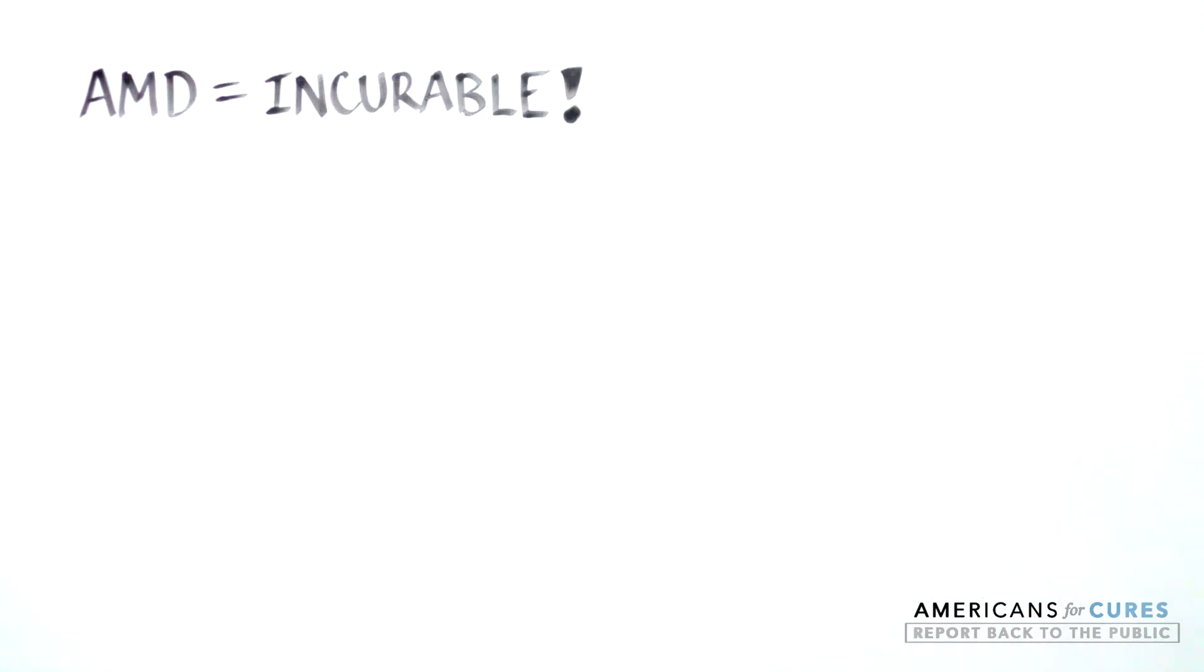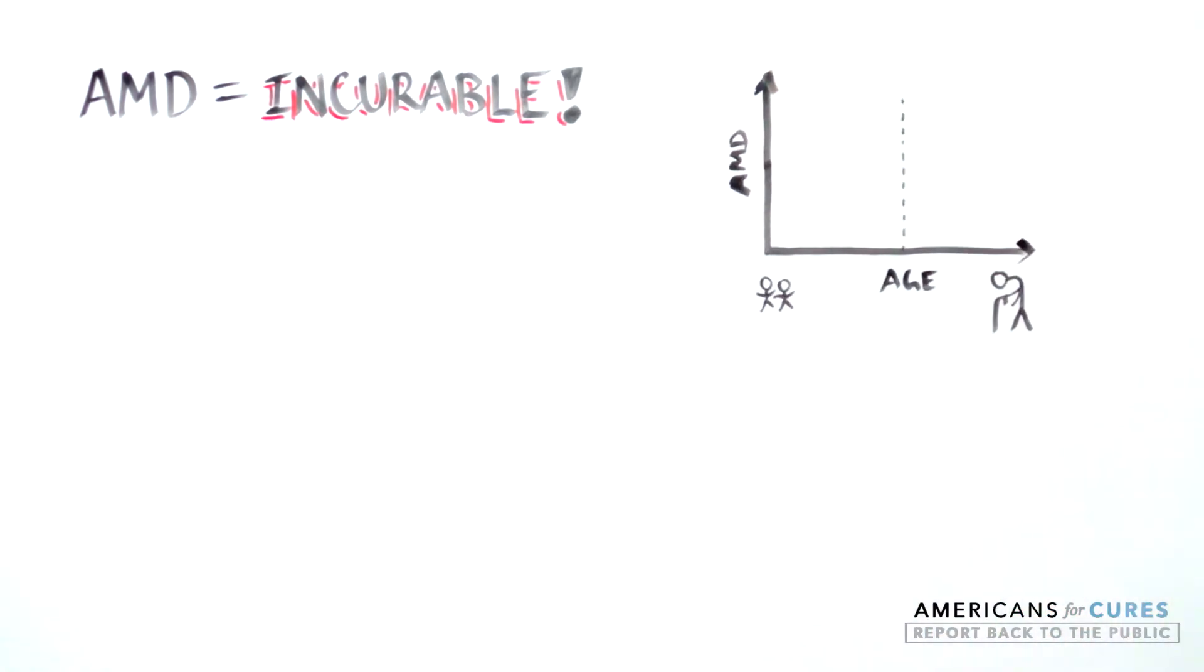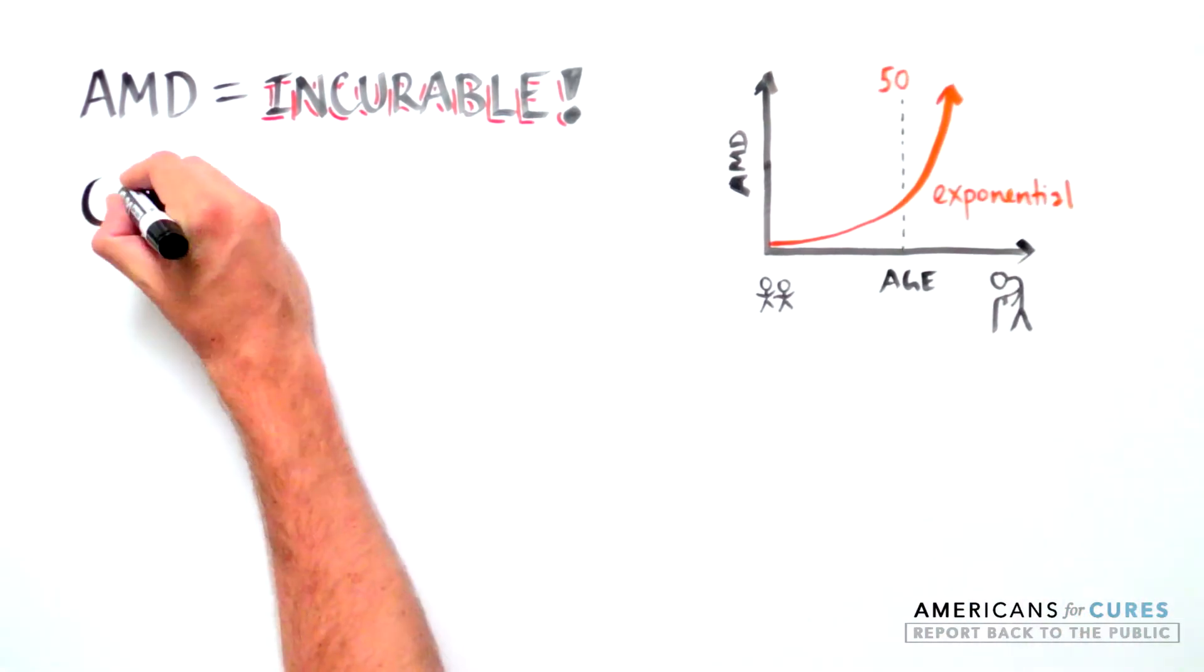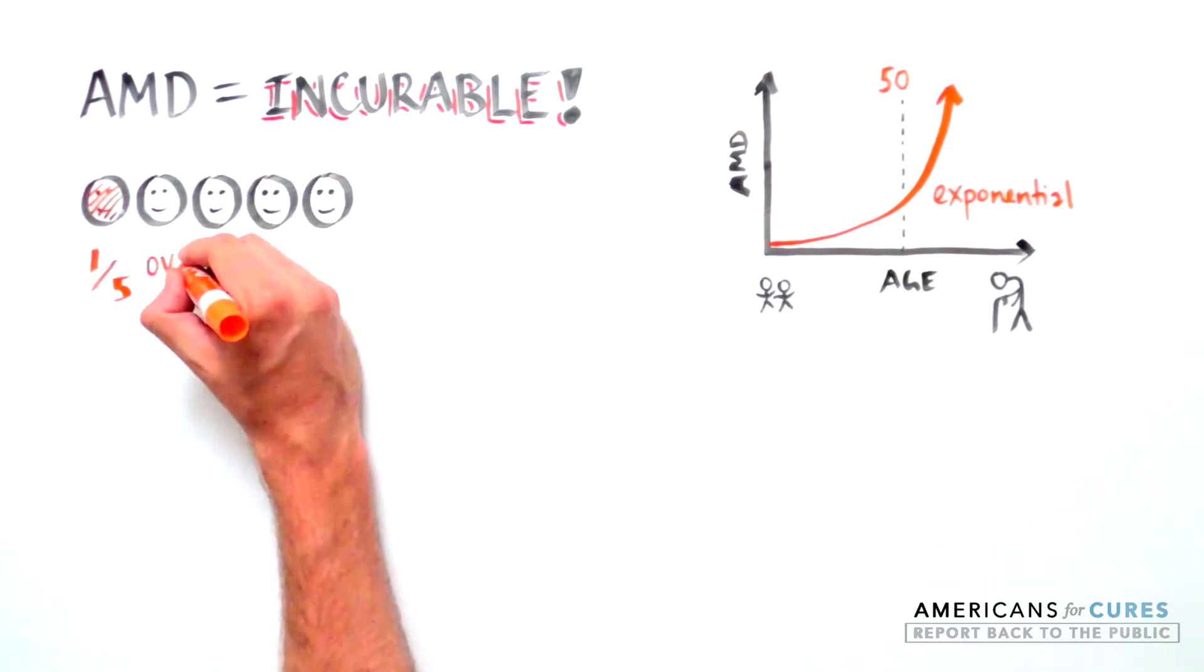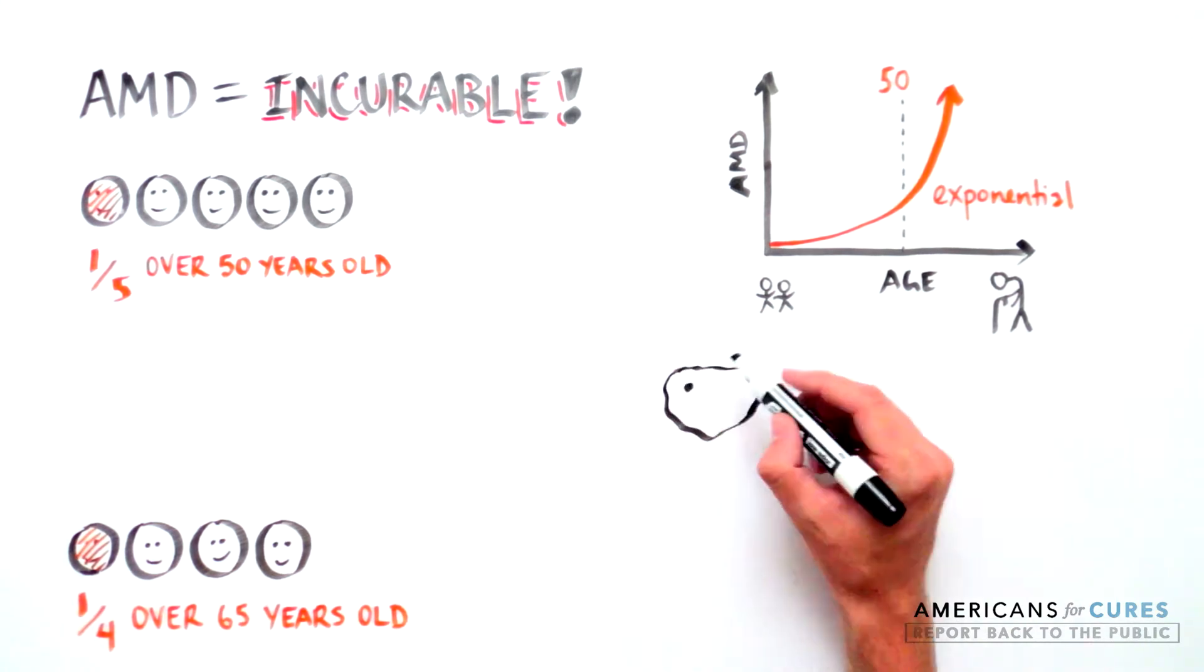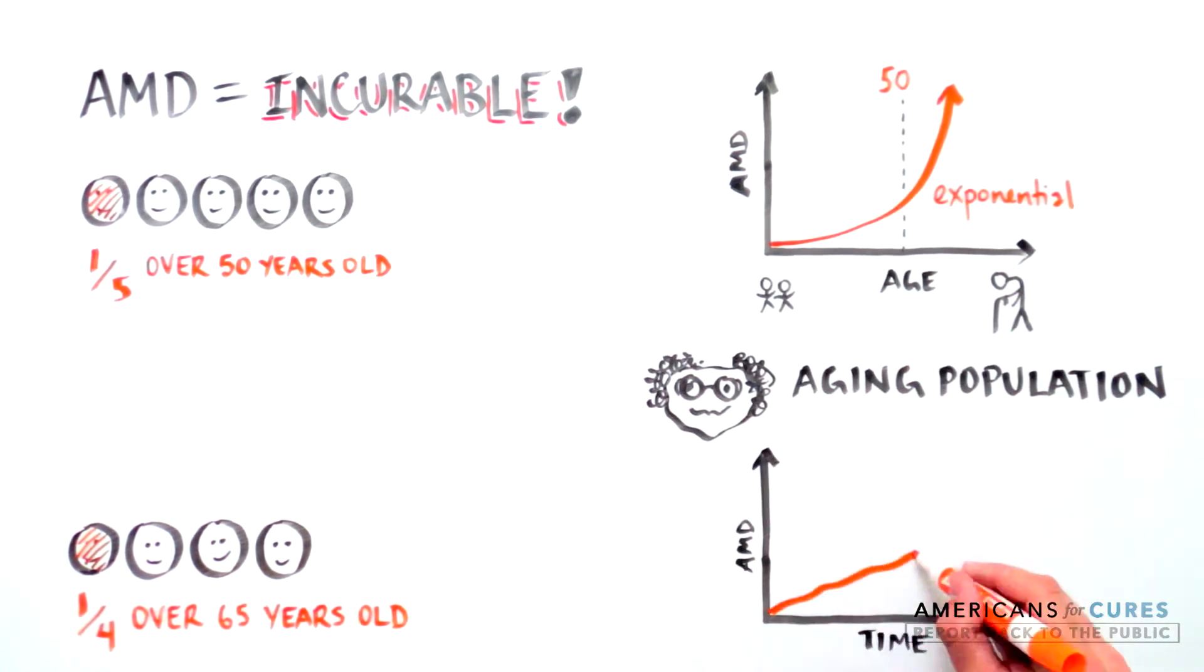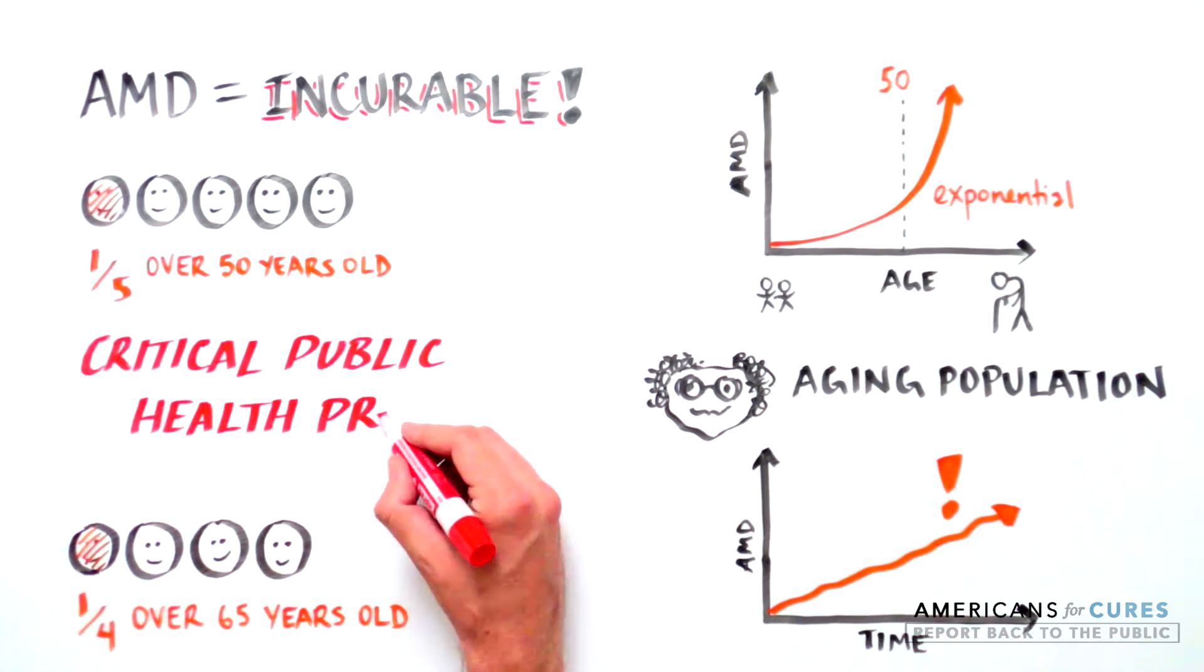AMD is an incurable disease most commonly seen in those over 50. It becomes increasingly common as people age. One in five Americans over the age of 50 and one in four Americans over the age of 65 will develop AMD. Within the aging population, the rate of AMD will continue to rise, making it a critical public health problem.